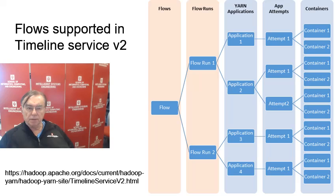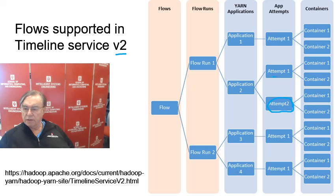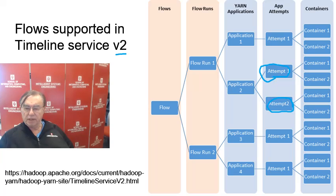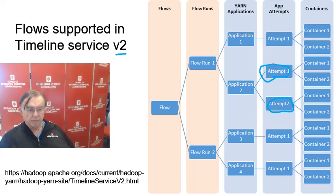Here is an example of the version 2 timeline: a flow has multiple runs, runs consist of multiple applications, and those applications may have multiple attempts because the first attempt may have failed. These use containers, and all this graph information — the specification of the graph and data about the nodes within it — are stored in the timeline.